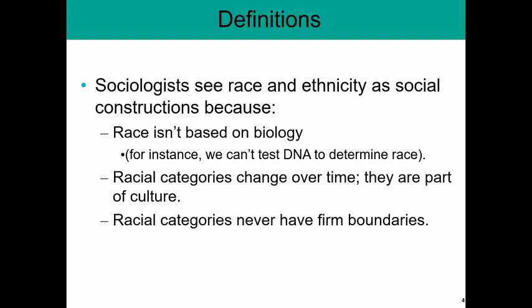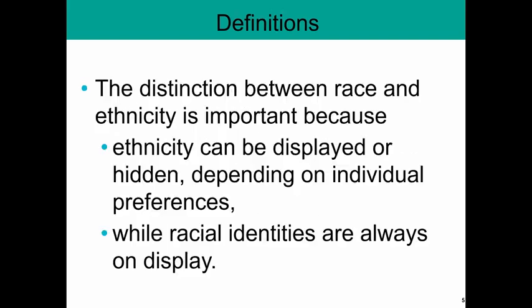Racial categories never have firm boundaries. There are in-between areas within racial categories, and those in-between areas can be especially broad when it is socially acceptable within a society to have mixed-race relationships and children of mixed-race to be born. These are important distinctions, because depending on your racial identity versus your ethnic identity, the way you behave in those identity categories can change.